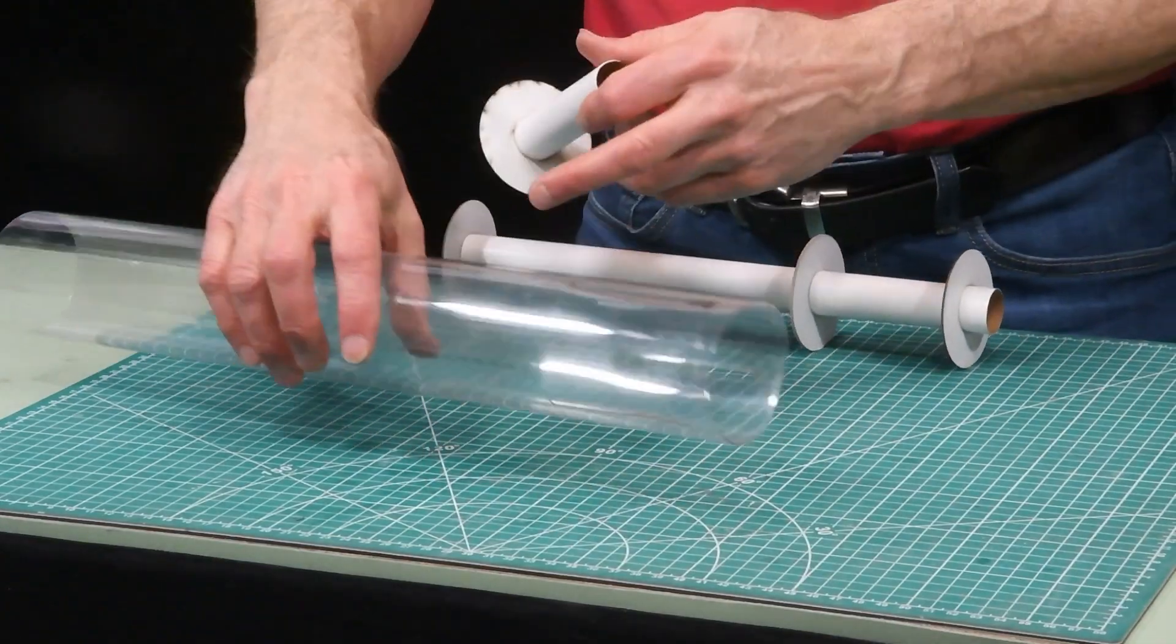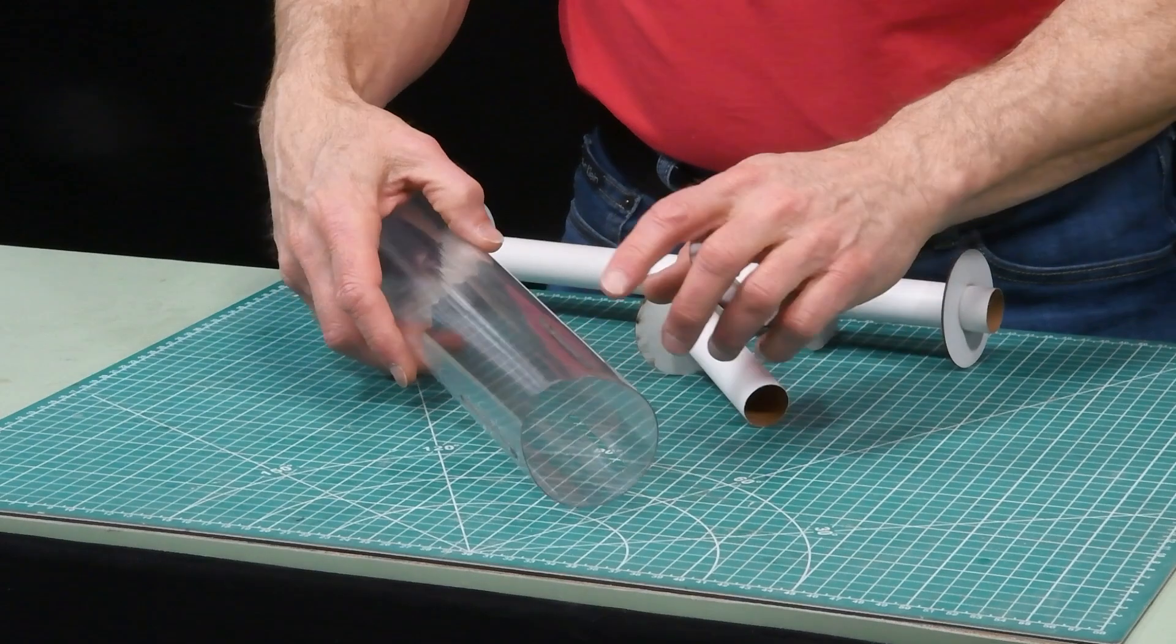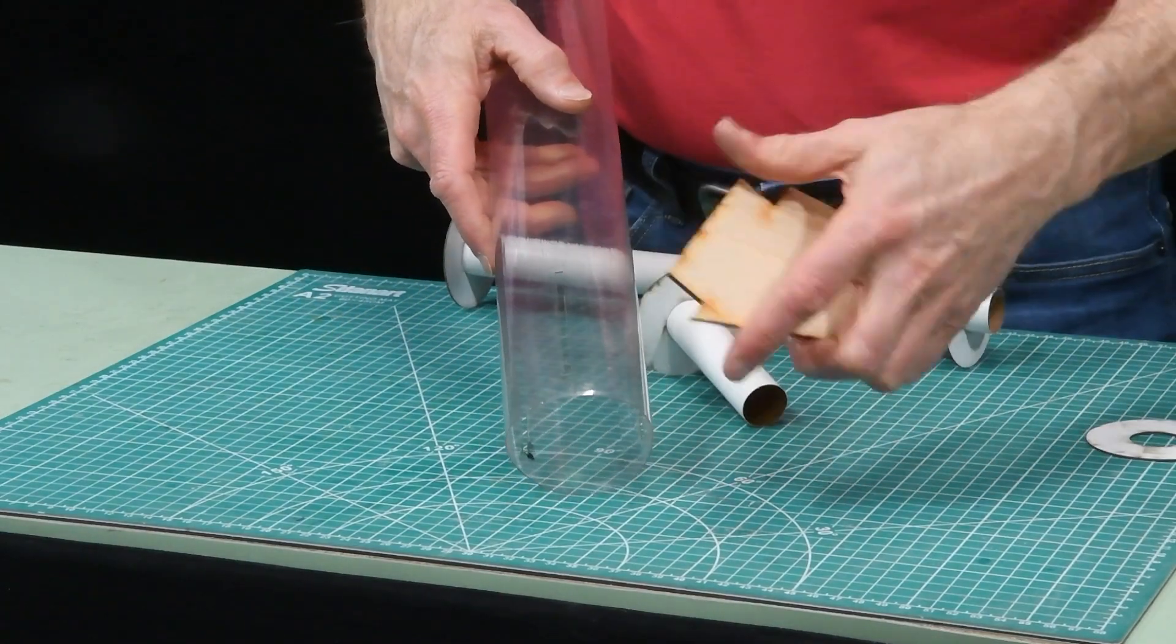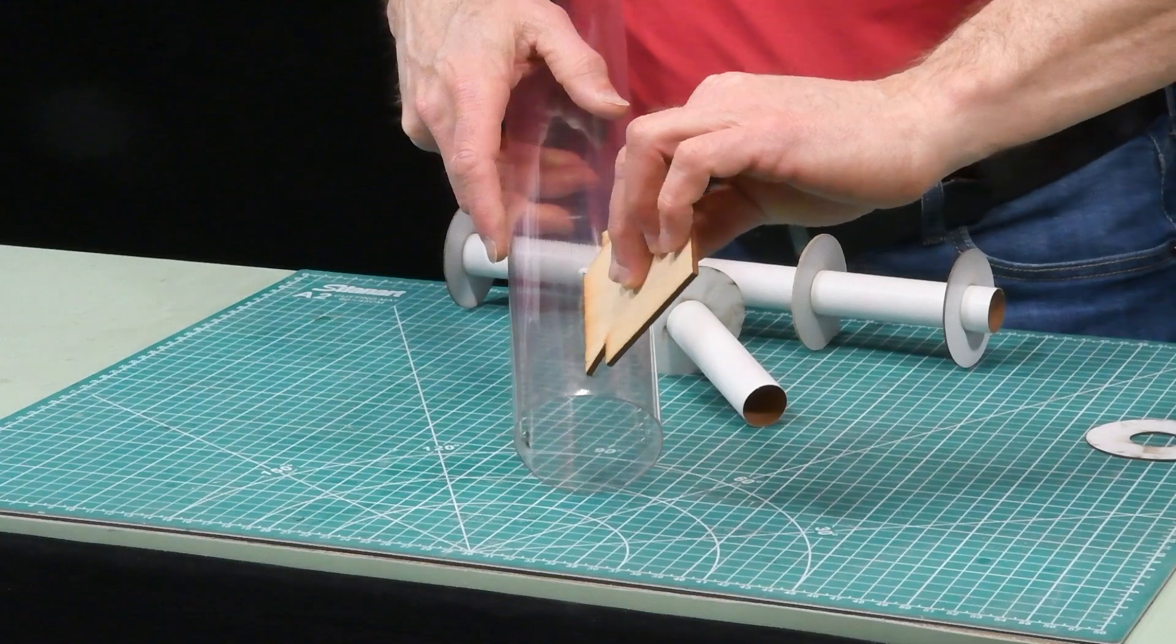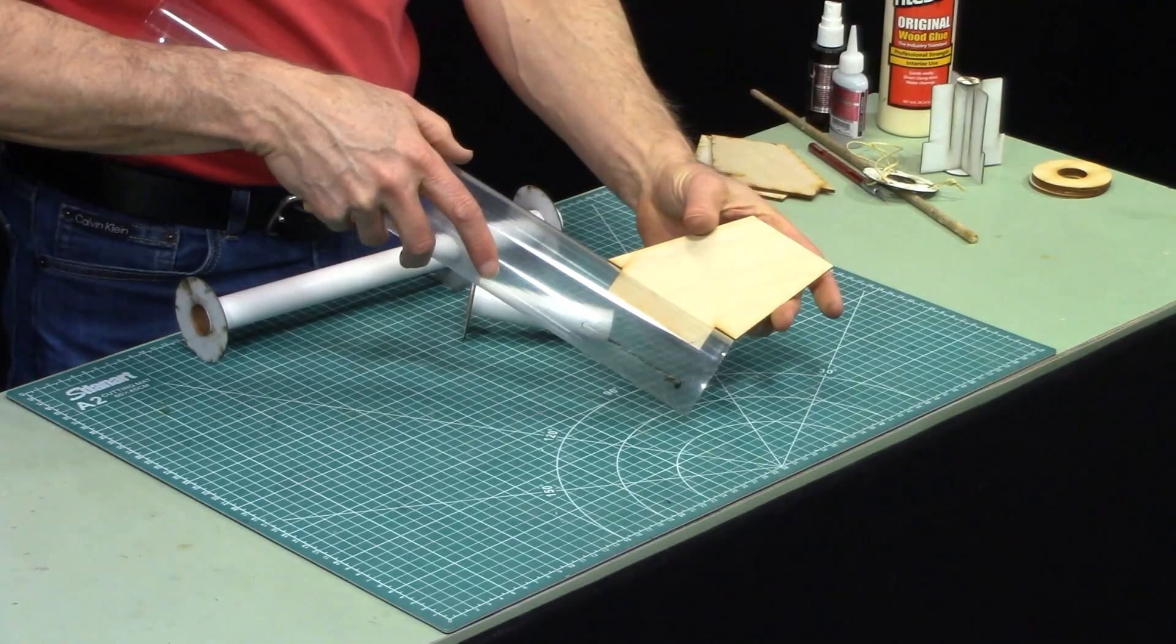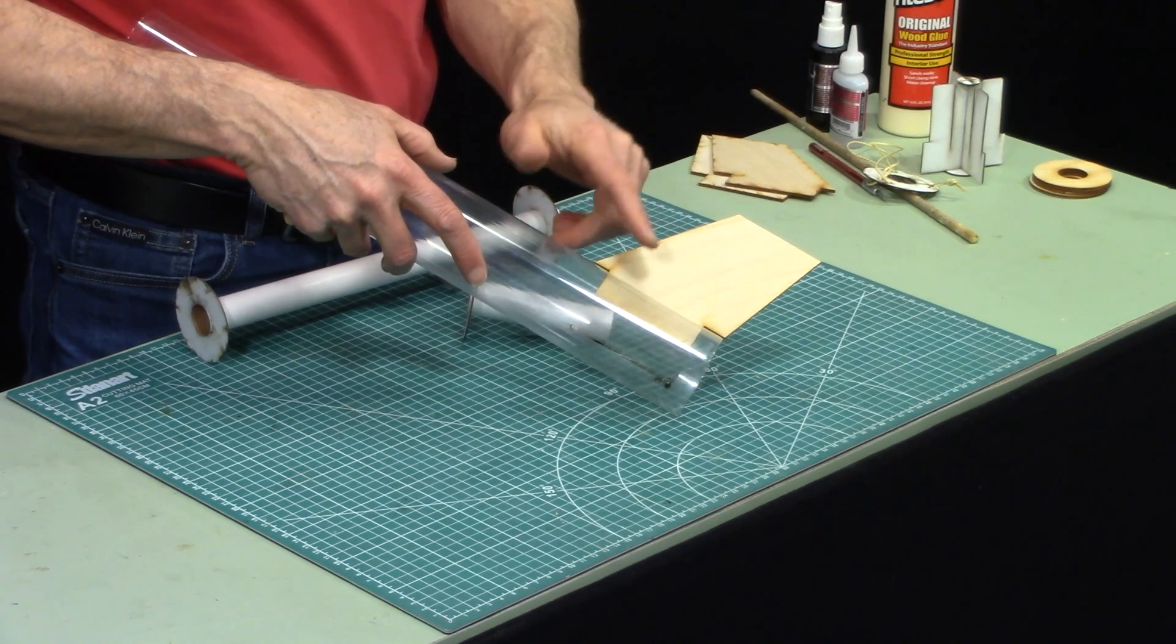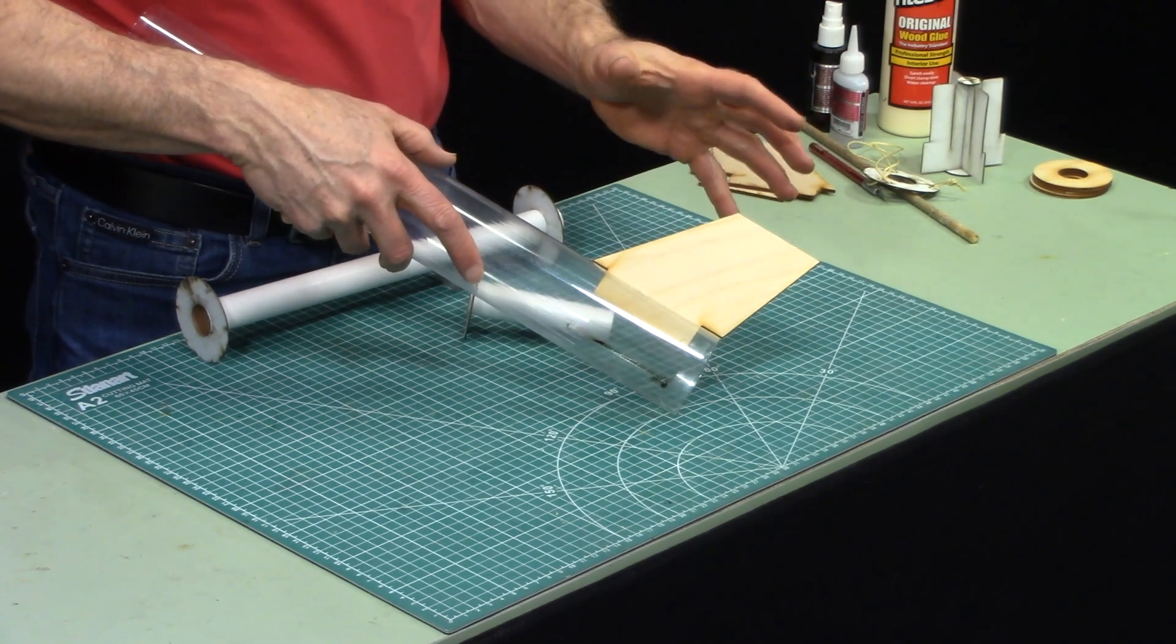Here I've got a clear body tube so that you can see inside and we're going to be designing a rocket that has through the wall fins. I've got slots here in the tube where I can install fins and the purpose of this is called through the wall fins and it makes the rocket a lot stronger.